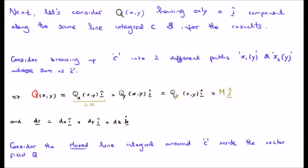Now what we will do is consider a separate vector field Q, a function of xy, but this is only going to have a j-hat component. We're going to consider its action along the same line integral C, and having looked at what happened with the vector field P, we'll see if we can infer the results for the vector field Q.